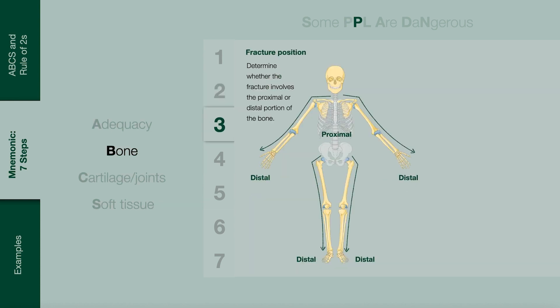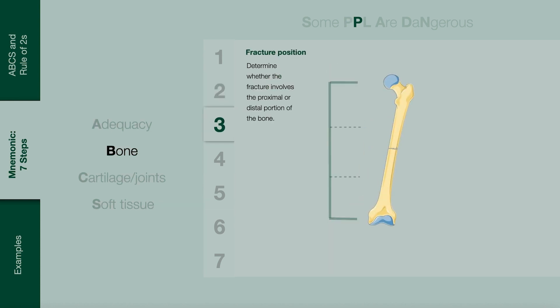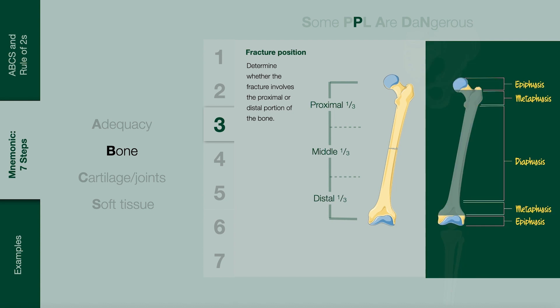When describing the position of the fracture, one should determine whether the fracture involves the proximal, middle or distal portion of the bone. Alternatively or additionally, one should comment on whether there is meta-, epi- or diaphyseal involvement.